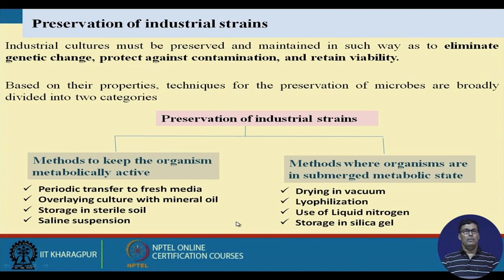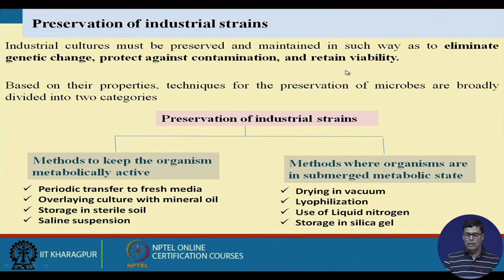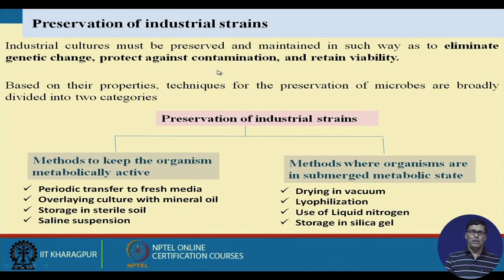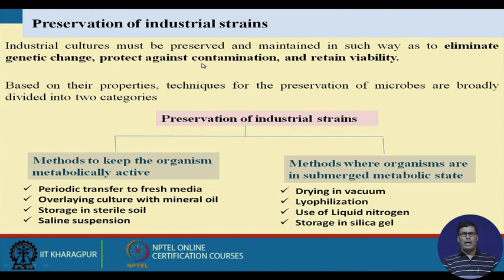Industrial cultures must be preserved and maintained in a way that eliminates genetic changes, protects against contamination, and retains viability. These three factors are critical. To prevent genetic changes, organisms should not be exposed to UV rays, harmful chemicals, or adverse conditions. Contamination is a major concern, as the atmosphere contains many microorganisms.